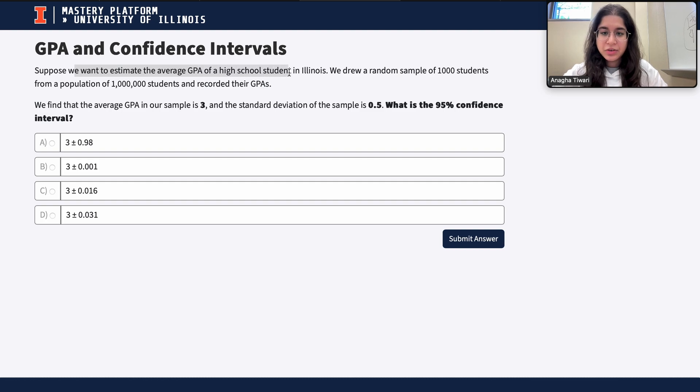Suppose we want to estimate the average GPA of a high school student in Illinois. We drew a random sample of 1000 students from a population of 1 million students and recorded their GPAs. We find that the average GPA in our sample is 3 and the standard deviation of the sample is 0.5.